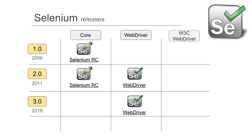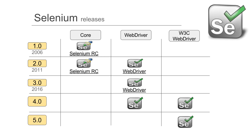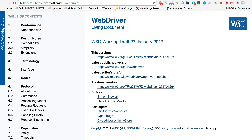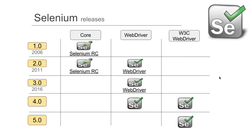Looking at the roadmap ahead, the WebDriver team is working on creating a W3C-compatible WebDriver. W3C, or World Wide Web Consortium, is an international body that creates standards for the World Wide Web. A W3C-compatible WebDriver means every browser will have its own implementation, making WebDriver very powerful. With Selenium 4.0, a W3C-compatible WebDriver will be introduced. In Selenium 5.0, the current WebDriver will be dropped and only the W3C-compatible WebDriver will remain. As of January 2017, the specs are being written with Simon Stewart, creator of WebDriver, actively involved.